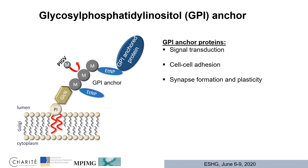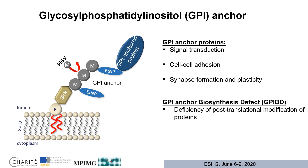GPI-Anchor proteins are crucial in signal transduction, cell-cell adhesion, and in synapse formation and plasticity. Therefore, hypomorphic mutations in genes such as PIG-V that are involved in GPI-Anchor synthesis lead to the disease GPI-Anchor biosynthesis defect, shortly GPIBD. This leads to deficiency of post-translational modifications of proteins, and therefore the linkage of the protein to the GPI-Anchor is lacking.